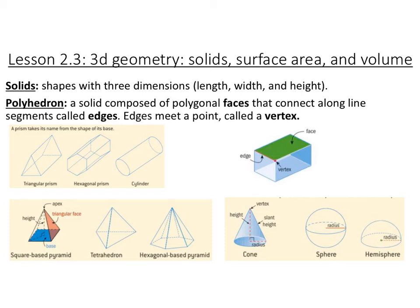This is three-dimensional geometry with solid surface area and volume. A solid is a shape that has three dimensions: a length, a width, and a height, as opposed to just two dimensions. A polyhedron is a solid composed of polygonal faces — flat surfaces that are connected along line segments called edges, and they meet at a point called a vertex, or multiple vertices.